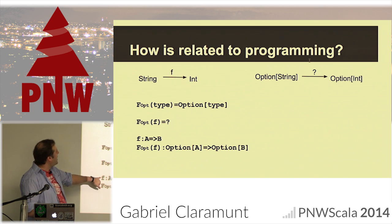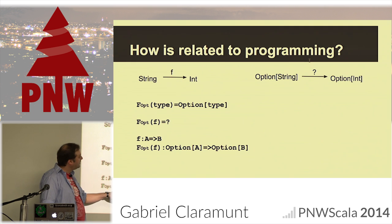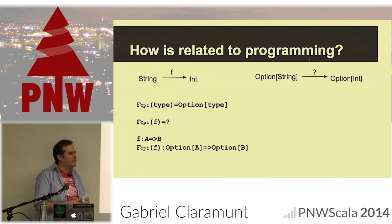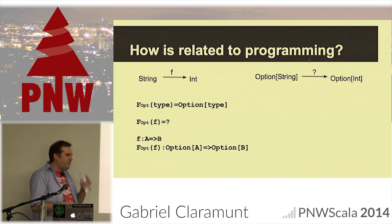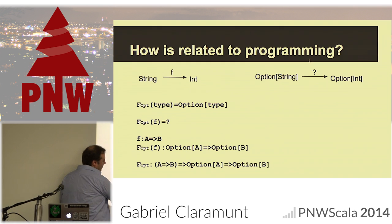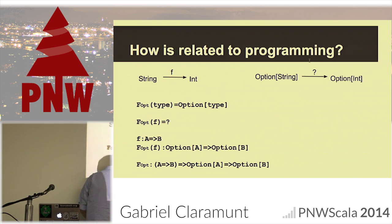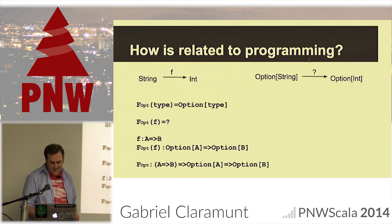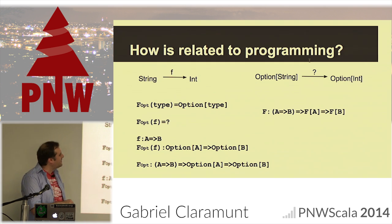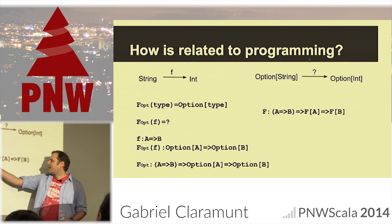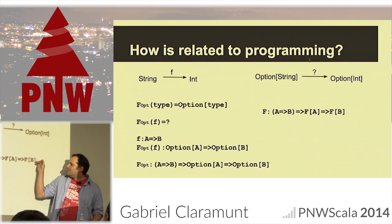So I have a function from A to B and I want to create a function from Option[A] to Option[B]. If I put everything in one signature: given a function from A to B, return a function from Option[A] to Option[B]. And if I generalize, I have a function from A to B and I need to return F[A] to F[B]. Does anybody recognize this signature?